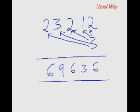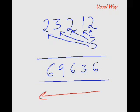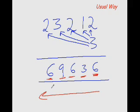If this is the method you used, by now you've spotted the inherent disadvantage: it gives us the answer from right to left — the least significant digit first. We have to wait until the very end before we can start seeing the answer. First you find 6, then 3, then 6, then 9, then 6 — only then can you see the answer is 69,636.